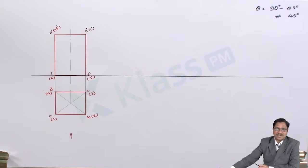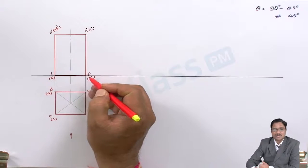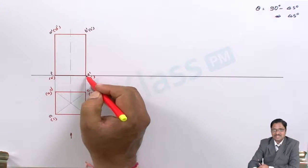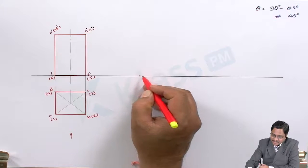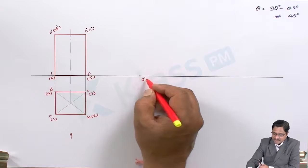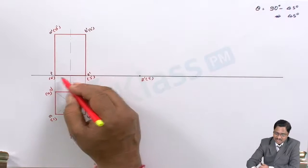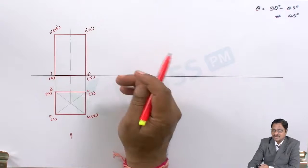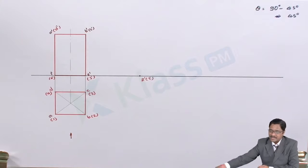As per the condition, one edge must be in HP. We have edges 1-4 and 2-3 available — either can be kept. Let us take edge 2-3 and keep it on the XY line in HP, labeling those points accordingly. The base must make 45 degrees with the reference. Since the known distances are available, the position must be changed using that angle. To measure the angle, use a protractor and mark the angular dimension to meet the required inclination.